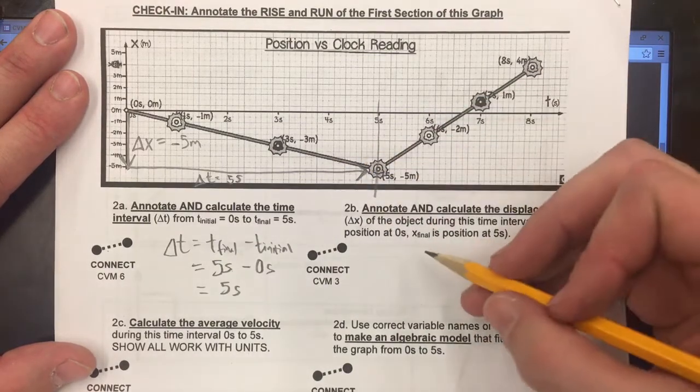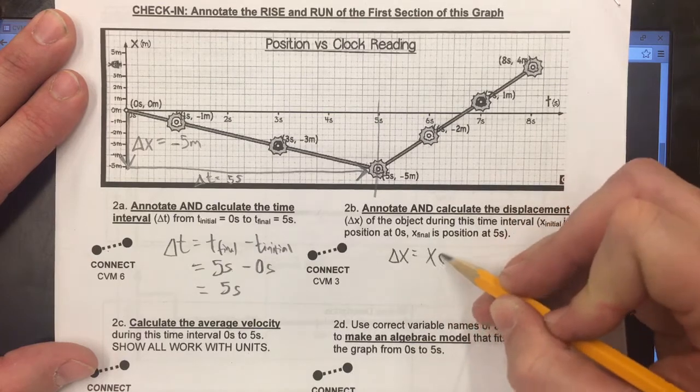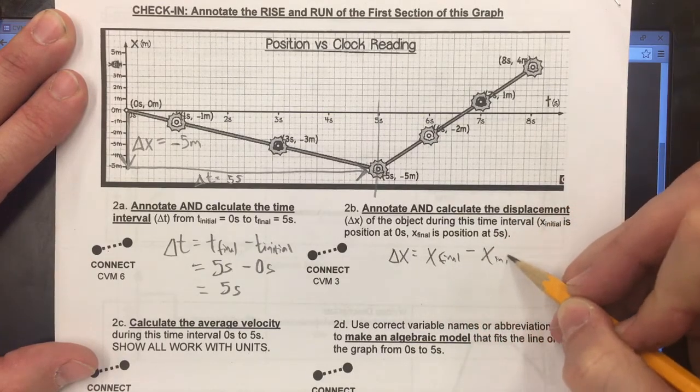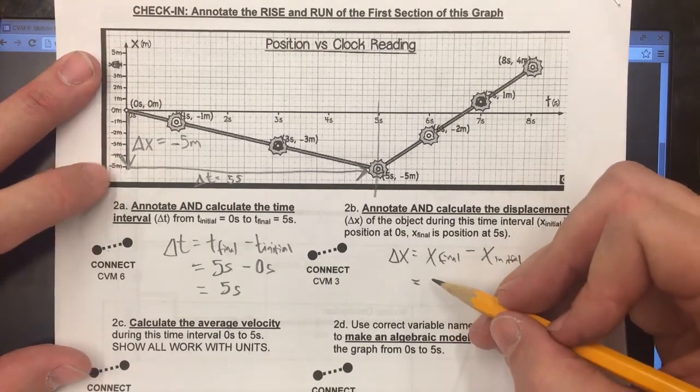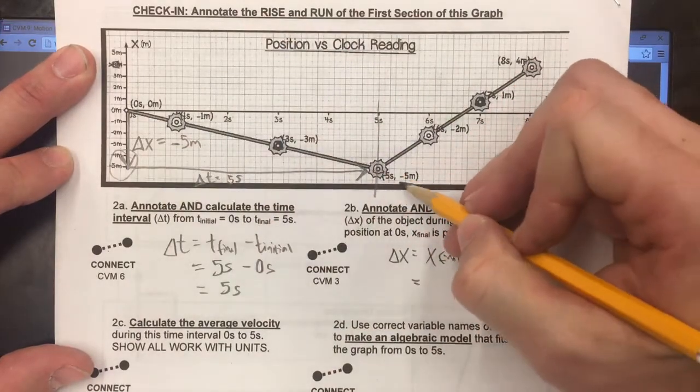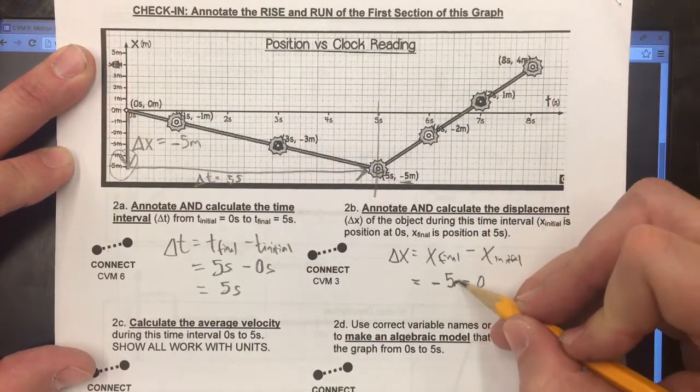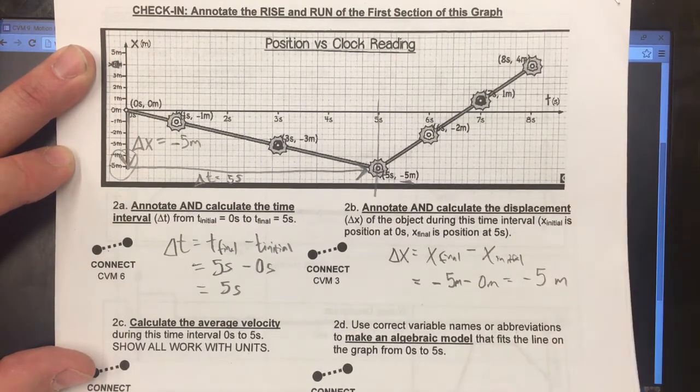We can calculate the displacement just like we did. The change in position equals X final minus X initial, which will be the final value of that position is negative five meters minus zero meters equals negative five meters.